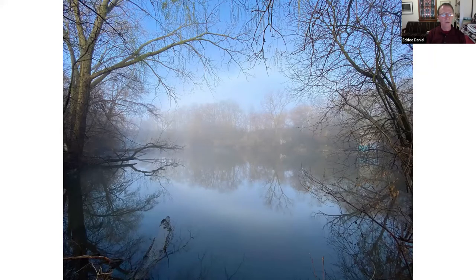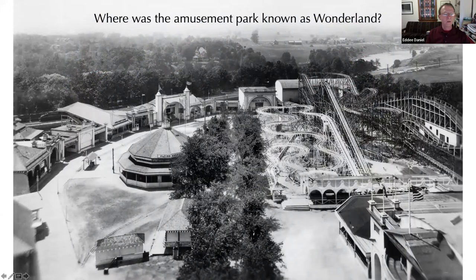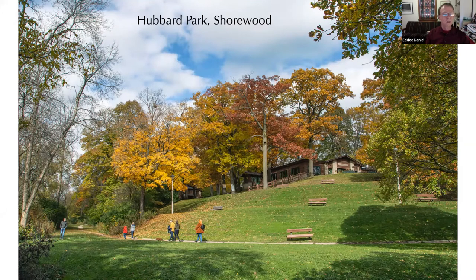You probably didn't know there was a beach in Estabrook Park because there is no evidence of it left. Question four: where was the amusement park known as Wonderland? This park grew over the years and had several different names; the most well-known is Wonderland. It was located where Hubbard Park is now in Shorewood. Hubbard is a very small park — only about four acres — and the amusement park was mostly on the west side of the railroad, where Shorewood has a park called River Park today.